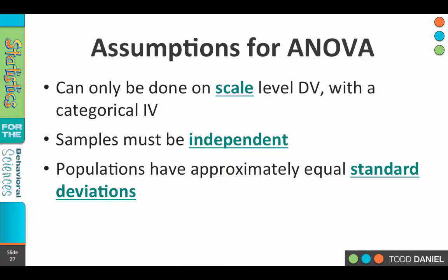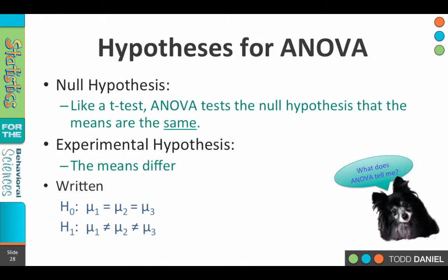The second assumption is that the samples are independent of each other. If they're not, we can do a repeated measures ANOVA, but for this example we are doing an independent samples ANOVA, so our samples have to be independent of one another — let's say we're comparing men and women on a variety of tests. The populations also have to have approximately equal standard deviations, and like the independent samples t-test, we can run a Levene test to verify this assumption.